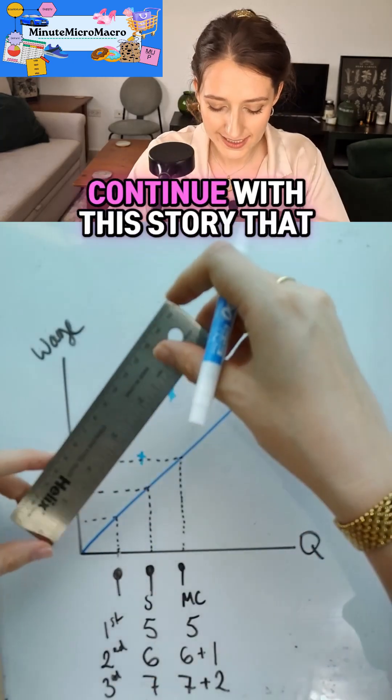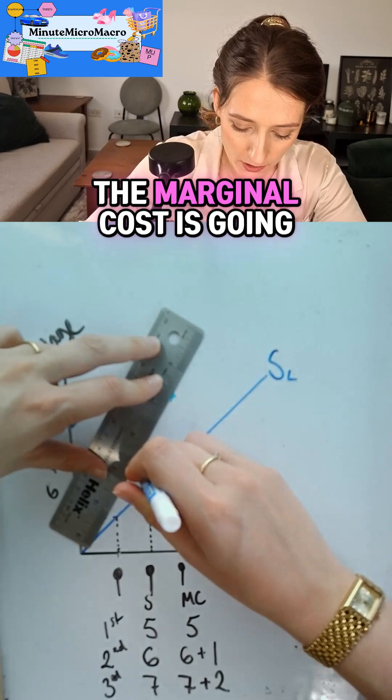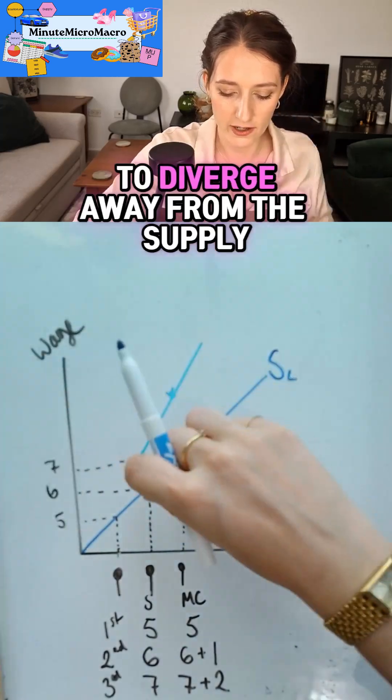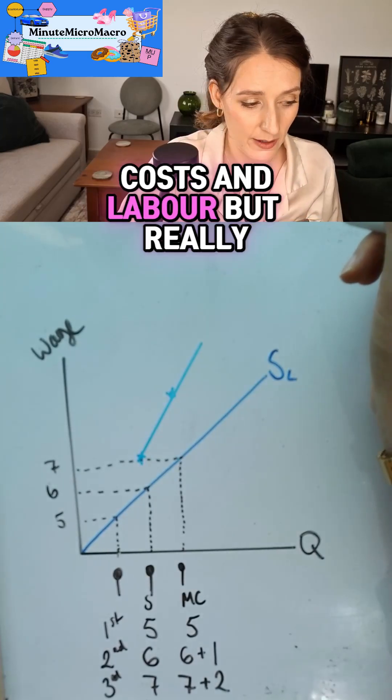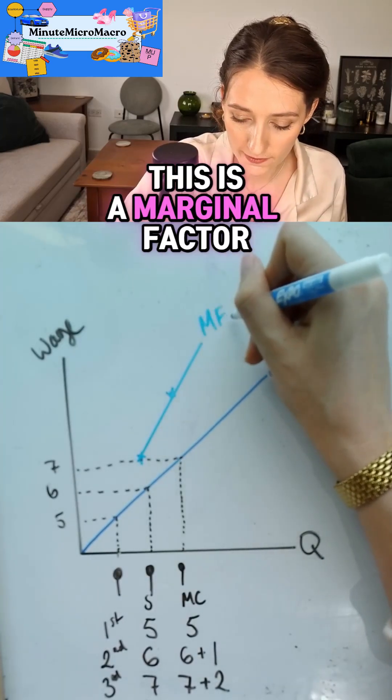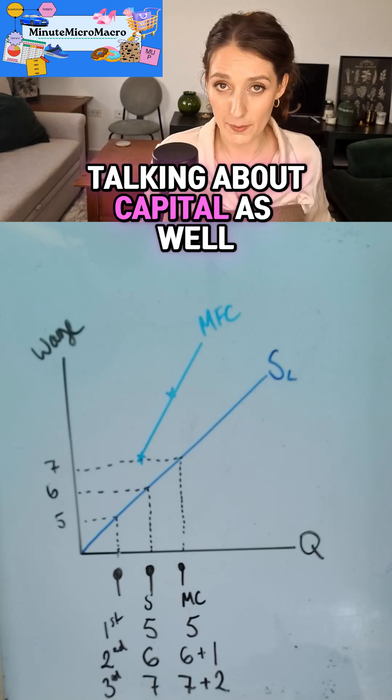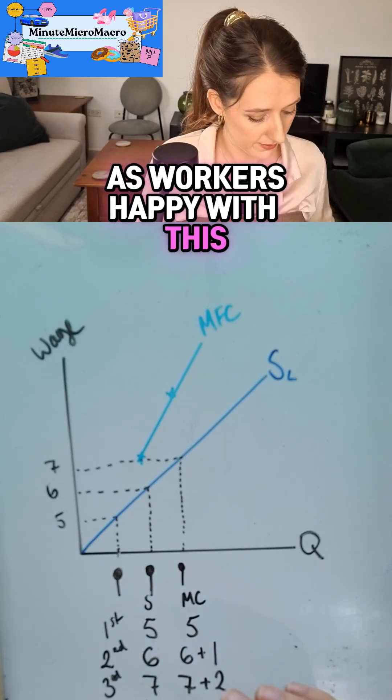You can see if I were to continue with this story, that the marginal cost is going to diverge away from the supply. Now we're talking about marginal cost of labor, but really this is a marginal factor cost because we could be talking about capital as well as workers.